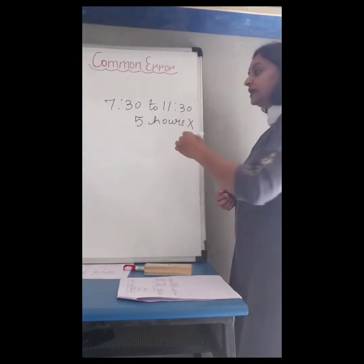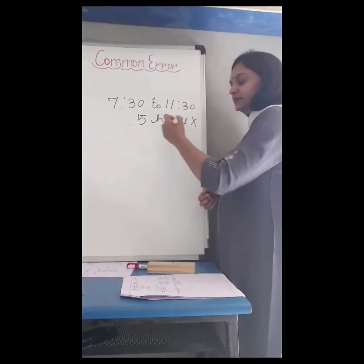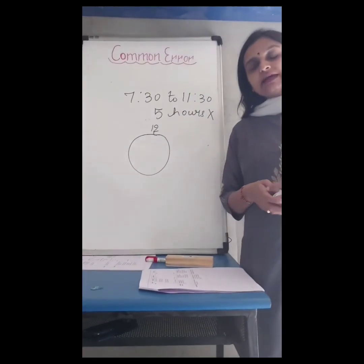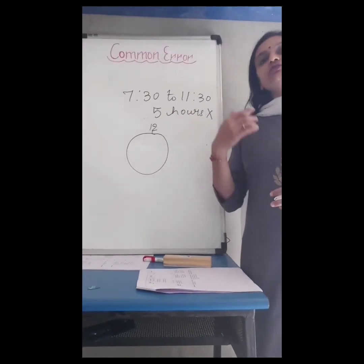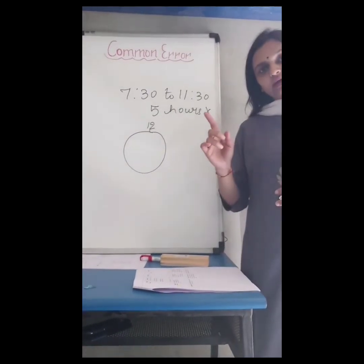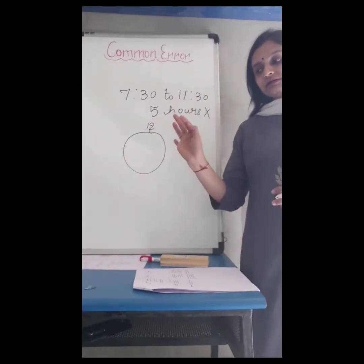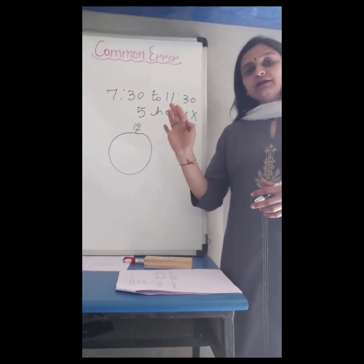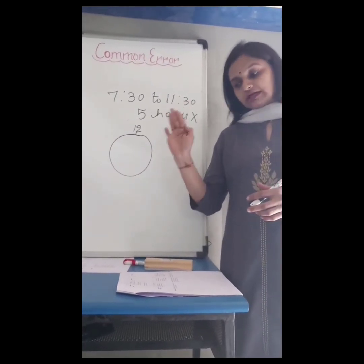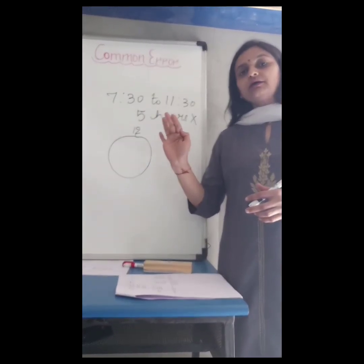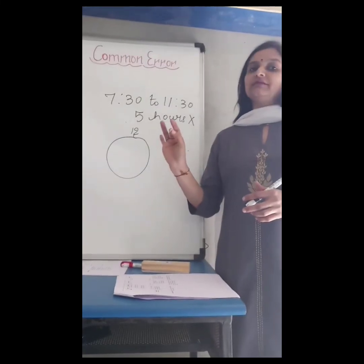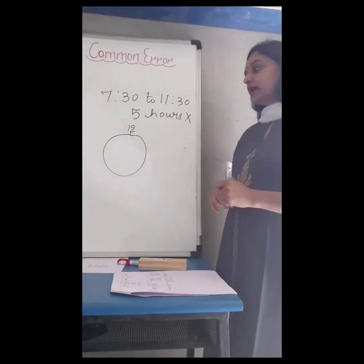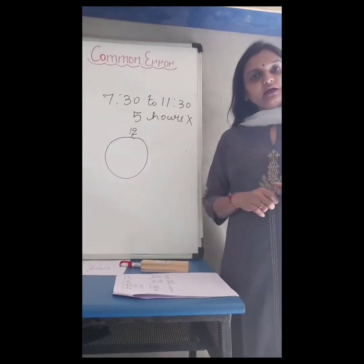We have to explain it correctly. It should be counted like this: 7:30 to 8:30 is 1 hour; 8:30 to 9:30 is 2 hours; 9:30 to 10:30 is 3 hours; and 10:30 to 11:30 is 4 hours. Likewise, we have to explain that. We have already taught them this way, but as practice, parents please do take care of it.